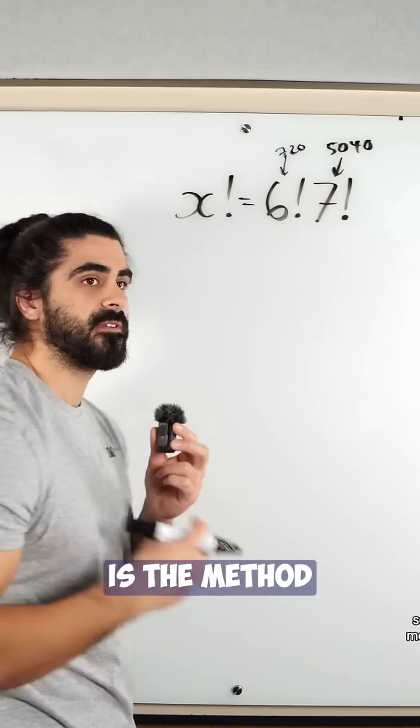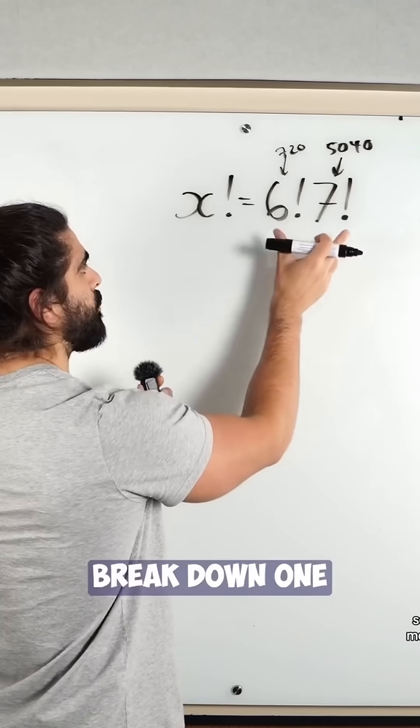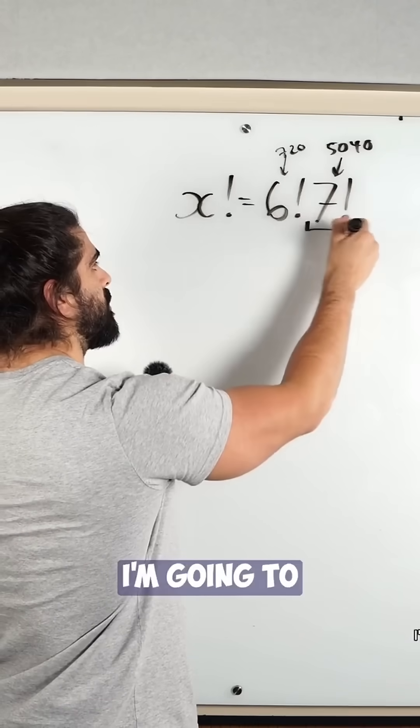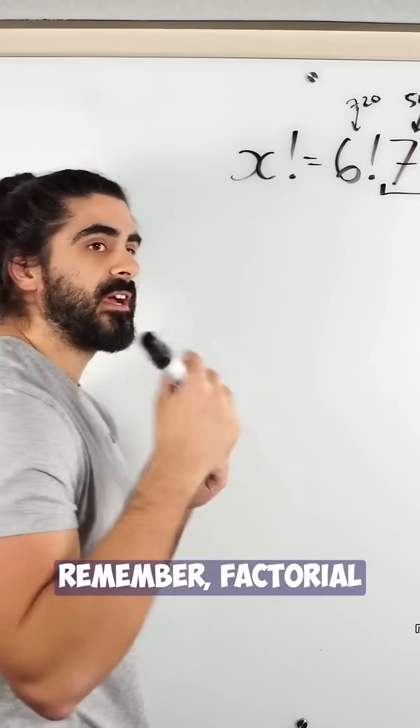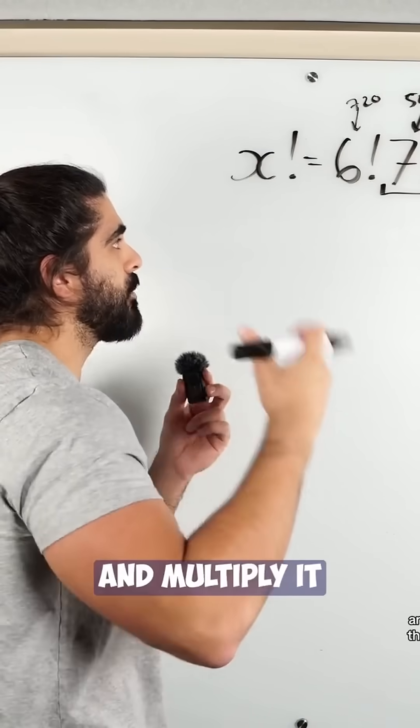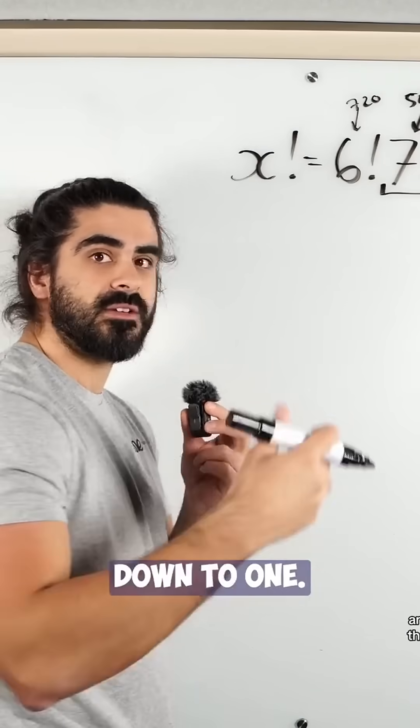So what we're going to do is the method I used to break down one of the factorials. I'm going to do the larger one. Remember, factorial means take the number and multiply it by the integers that precede it down to 1.